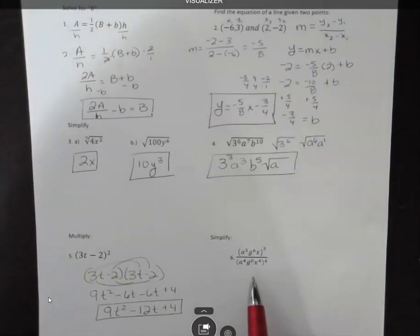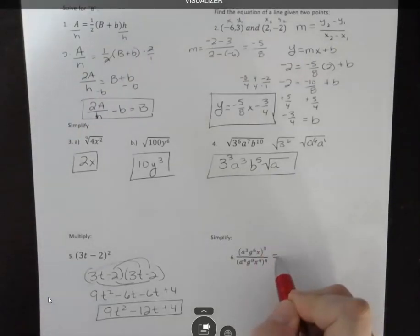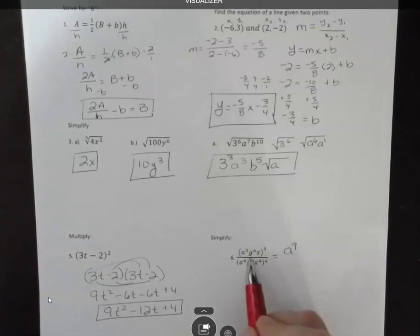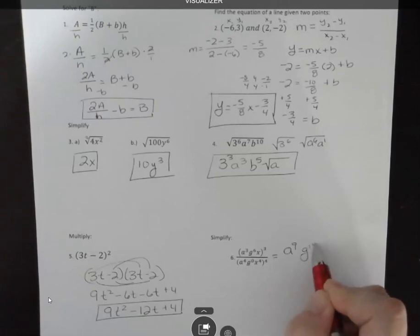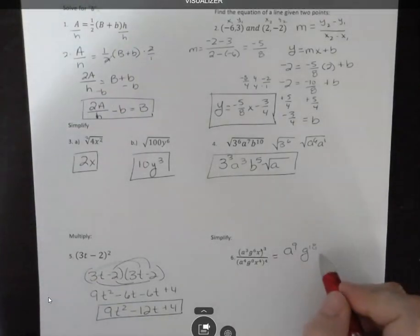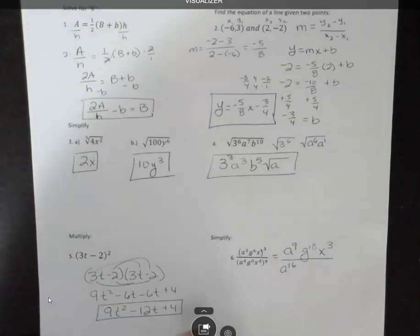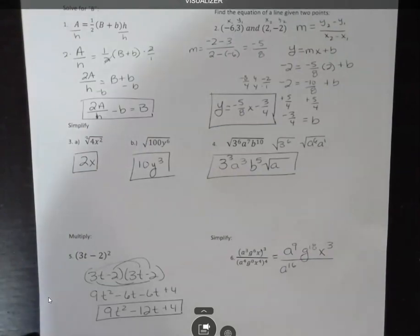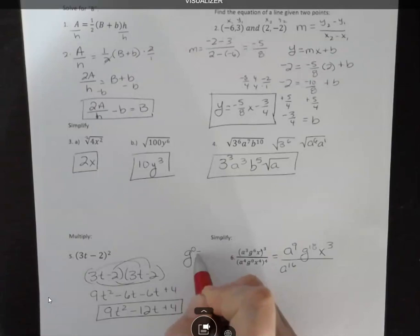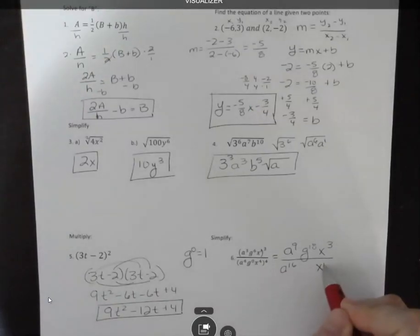Over here we're simplifying an expression. The first thing I'm going to do is simplify the numerator and the denominator separately, and then I'll look at it. So a to the third to the third, when you have a power raised to a power, you multiply. That's a to the ninth power. G to the sixth to the third is g to the eighteenth power. And x to the third, this is really x to the first to the third, so we have 1 times 3, or x to the third power. Down here we have x to the fourth to the fourth, so 4 times 4 is 16. We have g to the zero times 4. Zero times 4 is still zero. I don't need to write that at all because anything to the zero power is just like multiplying that by one. And then we have x to the fourth to the fourth, which is x to the sixteenth.